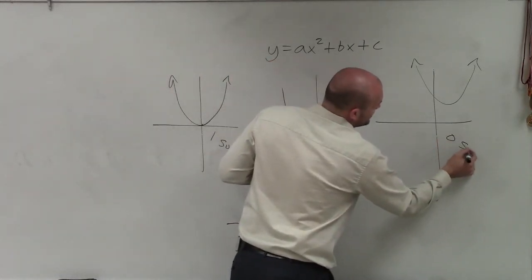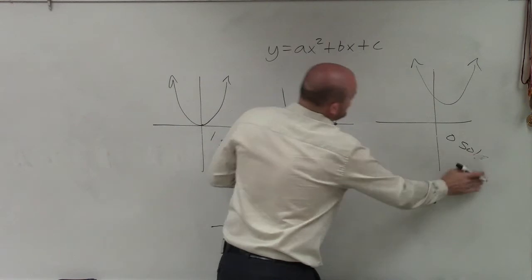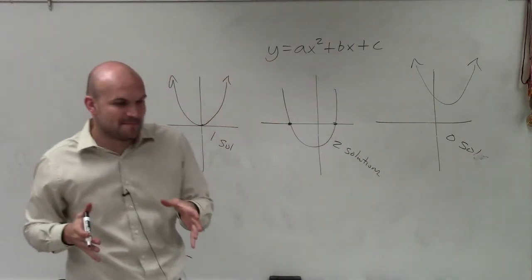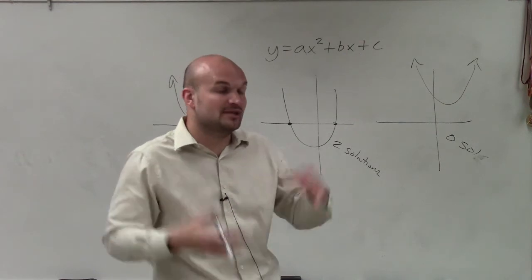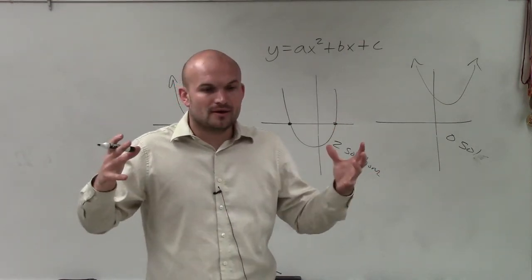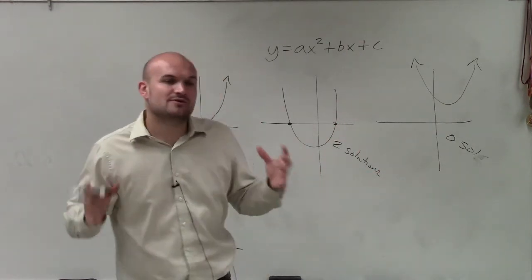So understanding that when you're solving a quadratic you can have one, two, or zero solutions to it makes you kind of think that you've got to be able to identify and that's a lot what we talked about in the quadratic formula using the discriminant. How is the discriminant going to affect my solution?